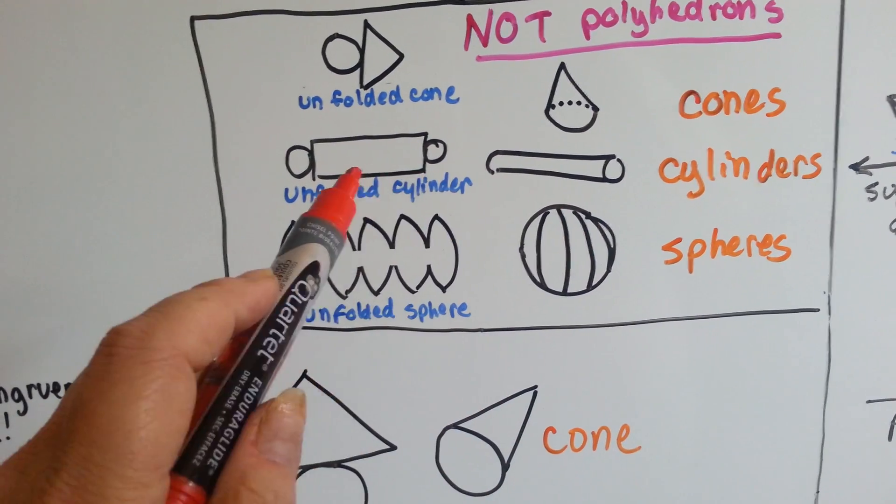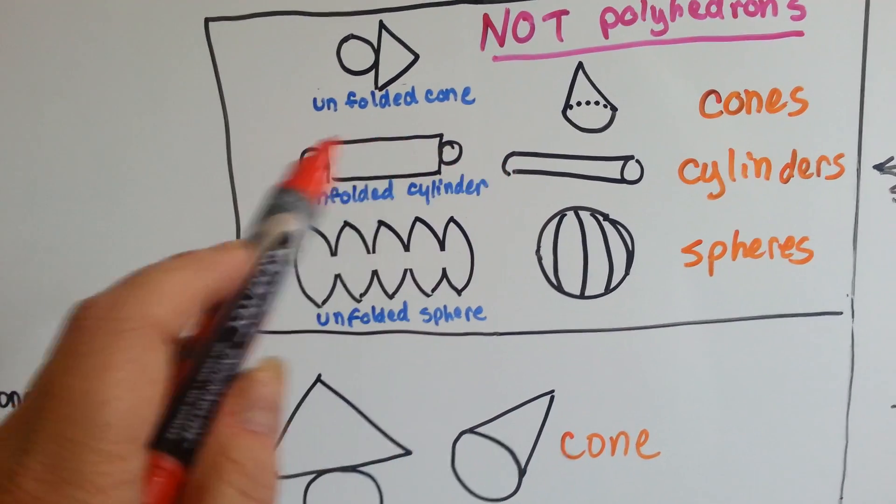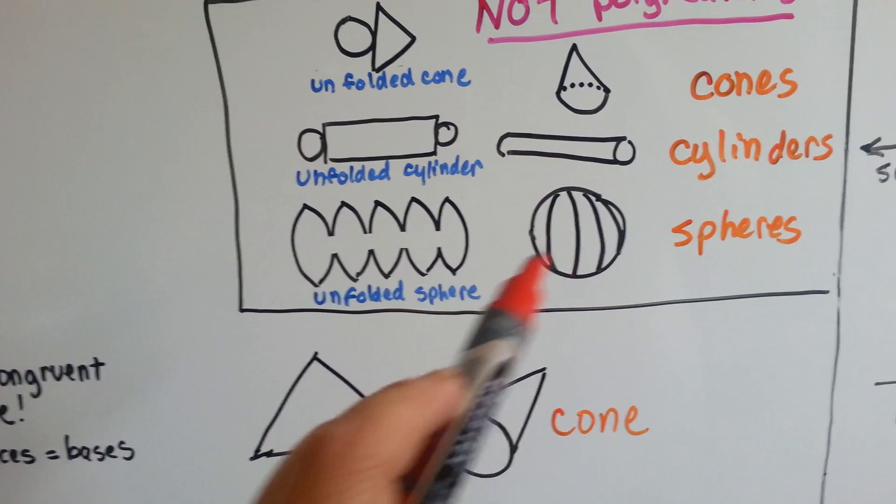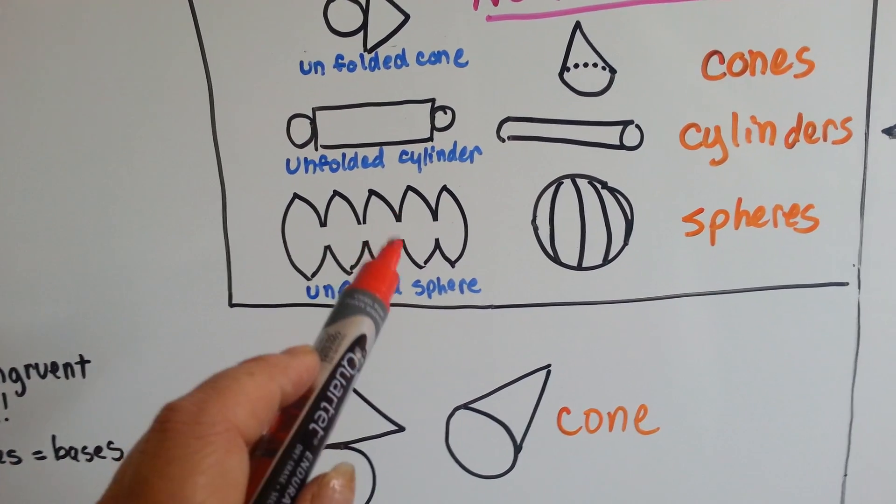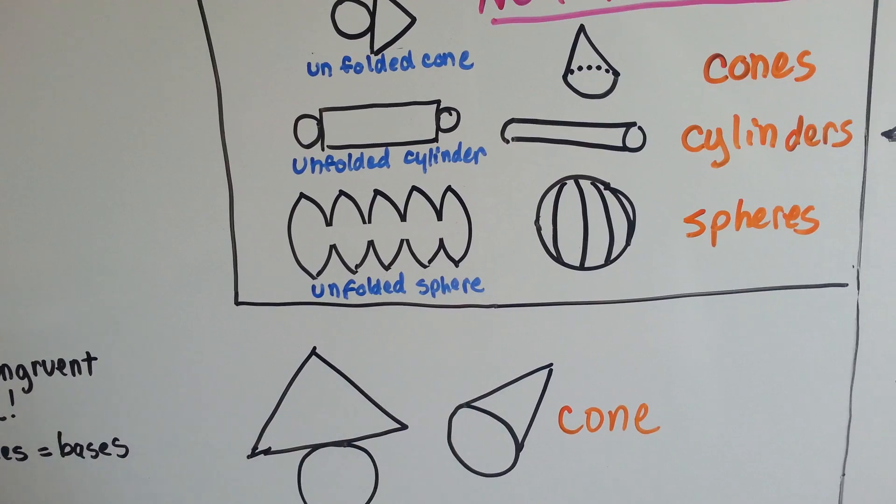A cylinder is a rectangle that has two circles for its base, if you were to open it up. And if you were to open up a sphere, it would look very odd. And this isn't the only way you could unfold a sphere. There's many if you look online.